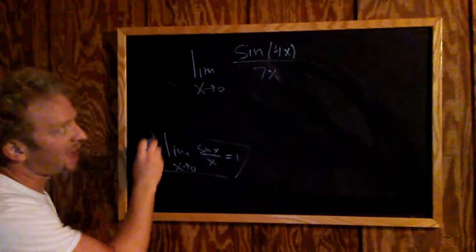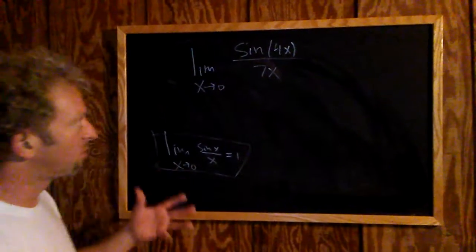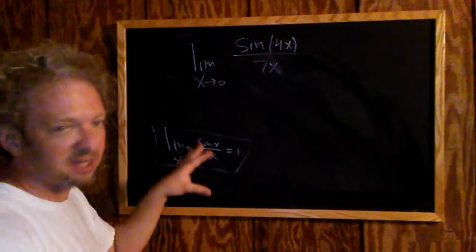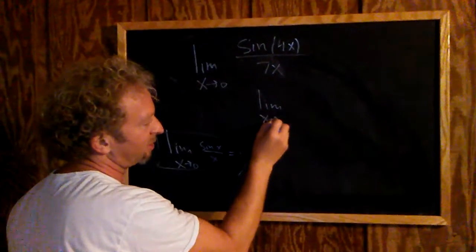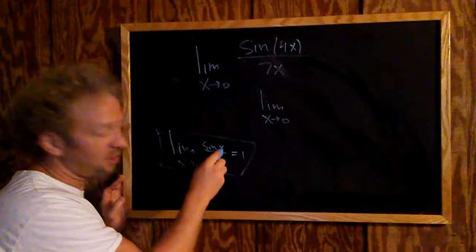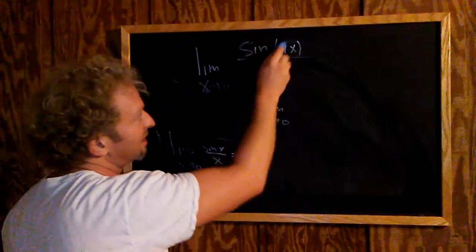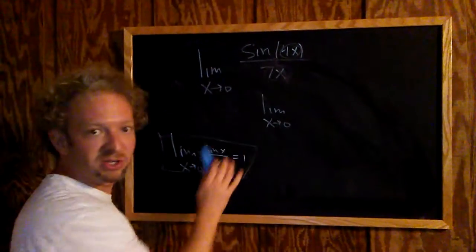We're going to use this fact to compute this limit. So we want to write this as the limit as x approaches 0. Here we have an x and here we have an x, so we can use this formula.